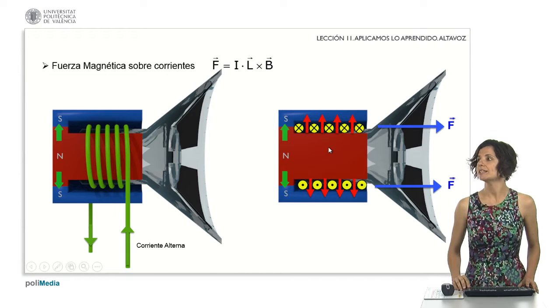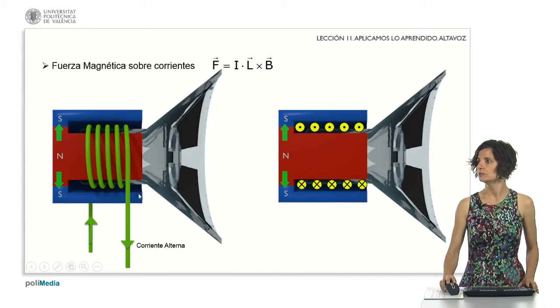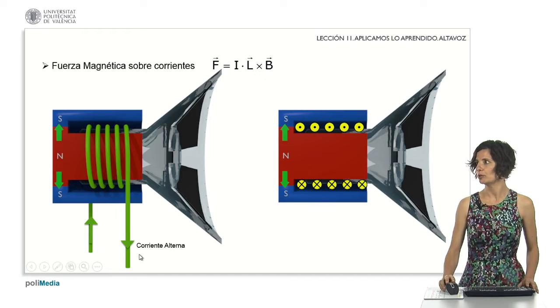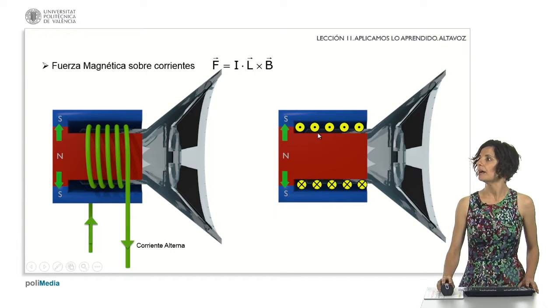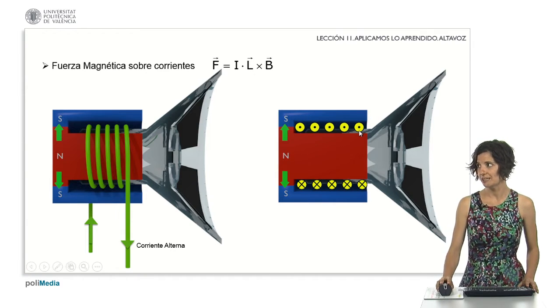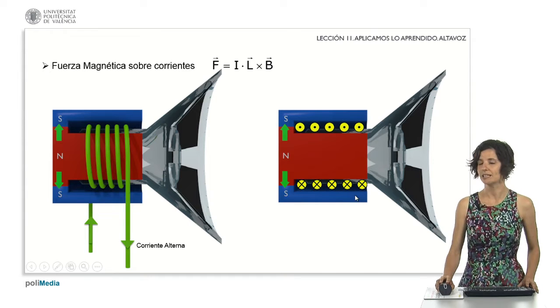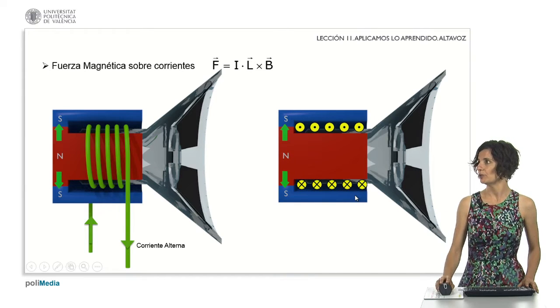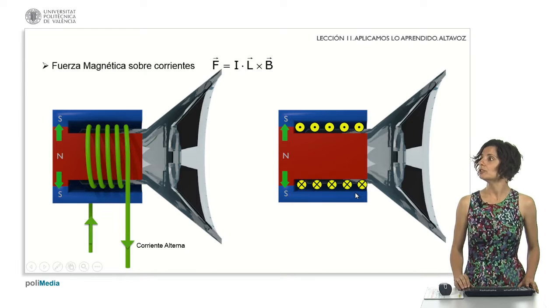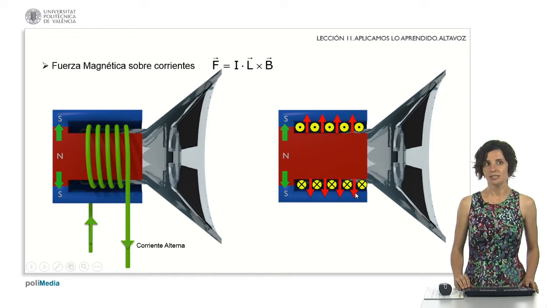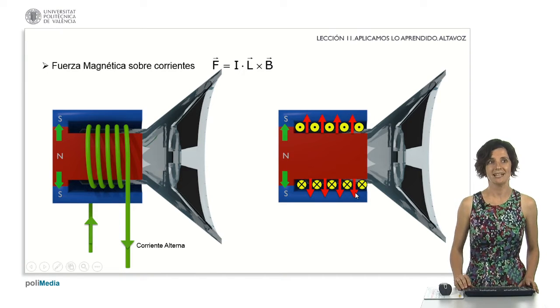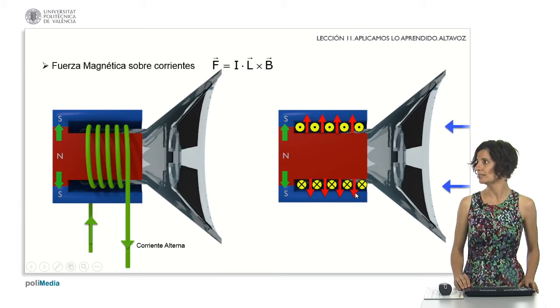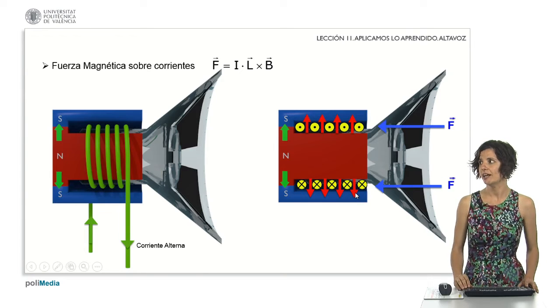When the current changes sense, it enters at this end and leaves at this end. We will change up here. The currents are represented by points and hereby crosses, in the opposite way to the previous one. And the magnetic field maintains its consistent direction. Consequently, according to the right-hand rule, the resulting force in this scenario will move to the left.